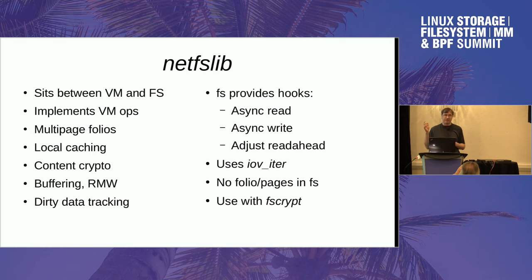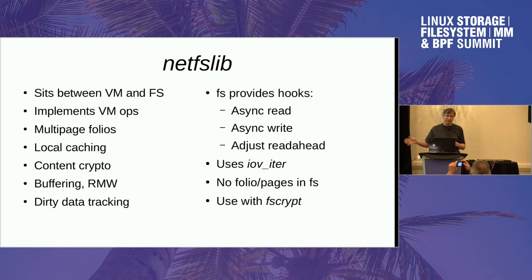What this does is sit between the VM and the file system, and it handles all your address space operation calls, apart from perhaps truncate, and it will assist with truncate. It also moves all the folio handling stuff, multi-page folio handling, into the library, so the network file systems don't need to know about that. Local caching moves there as well, which means the cache can deal with multi-page folios more easily.